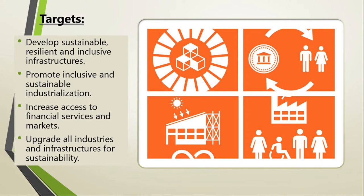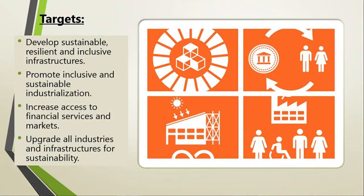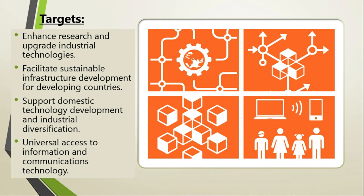What are the targets? The targets are the mini goals inside this global goal. There are eight: develop sustainable, resilient, and inclusive infrastructures; promote inclusive and sustainable industrialization; increase access to financial services and markets; upgrade all industries and infrastructures for sustainability; enhance research and upgrade industrial technologies; facilitate sustainable infrastructure development for developing countries; support domestic technology development and industrial diversification; and universal access to information and communications technology.